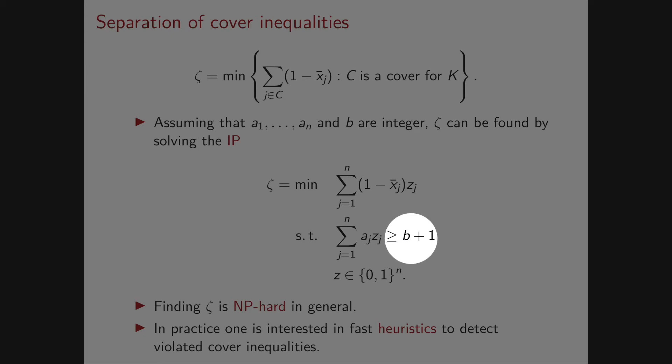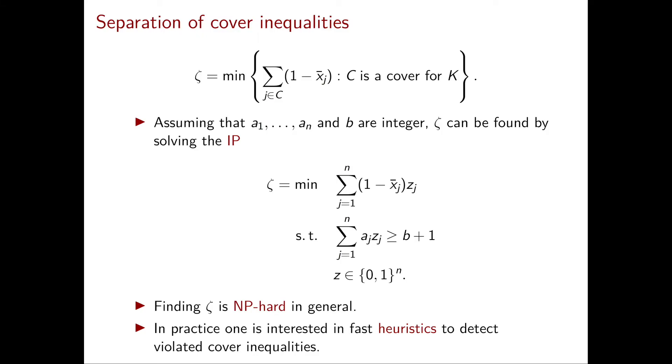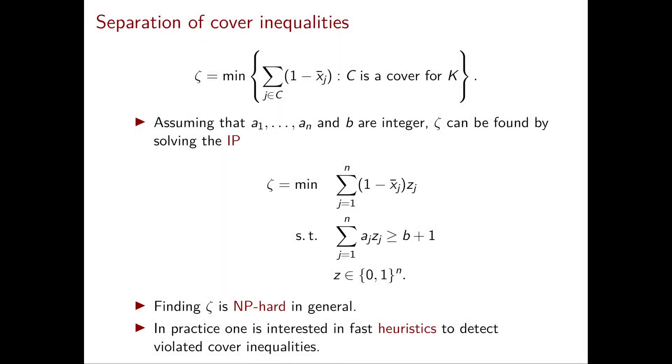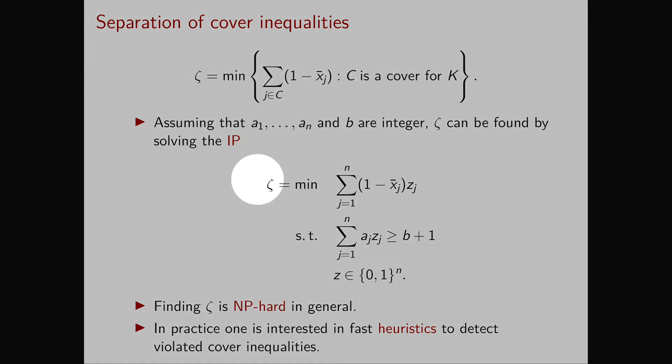However, we cannot write strict inequalities in integer programming problems. Therefore, under the assumption that all the aⱼ and b are integral, which we can assume without loss of generality by scaling, we can write the inequality sum of aⱼzⱼ greater than or equal to b + 1, since this sum will always be integer.